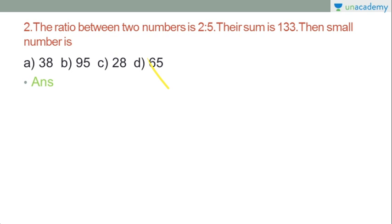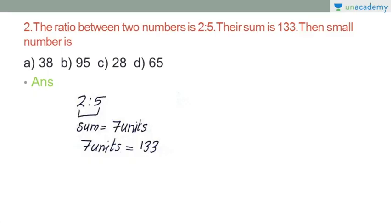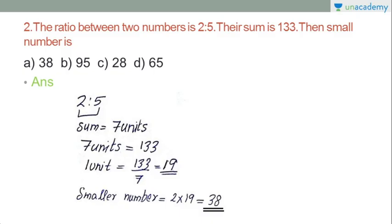We have two units and five units — that gives us seven units total. Seven units equals 133, so one unit equals 19. The smaller number is 2 into 19, which equals 38. Option A is the correct answer.